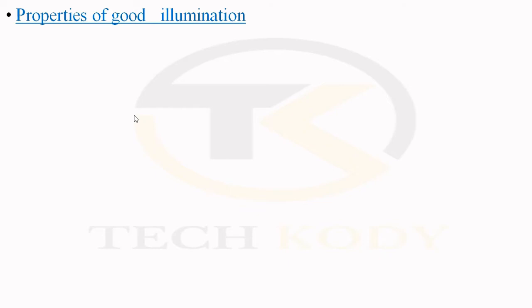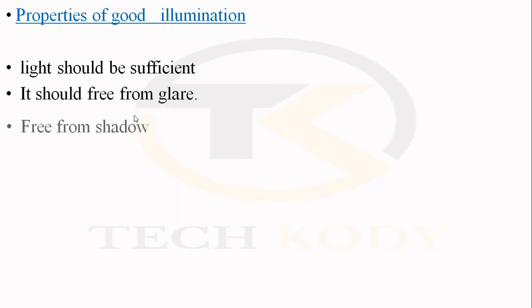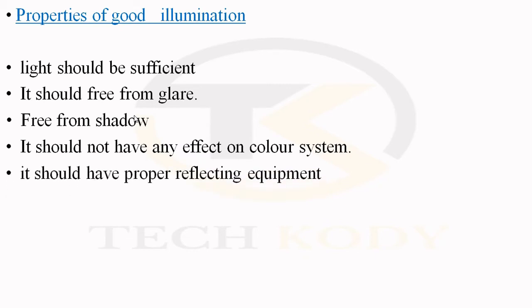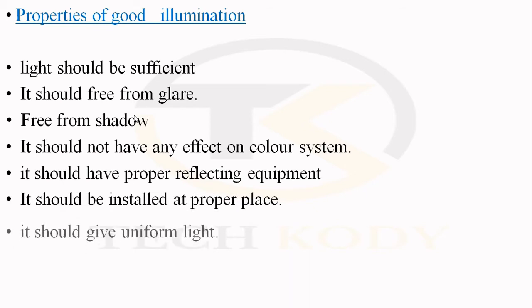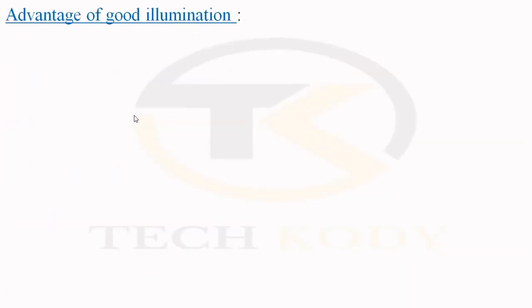So let us go on to the properties of good illumination. The light should be efficient. It should be free from glare. It should be free from shadow. It should not have any effect on the color system. It should have proper reflecting equipment. It should be installed in a proper place. It should give uniform light. It should reflect the correct size of the object. These are the properties of good illumination.